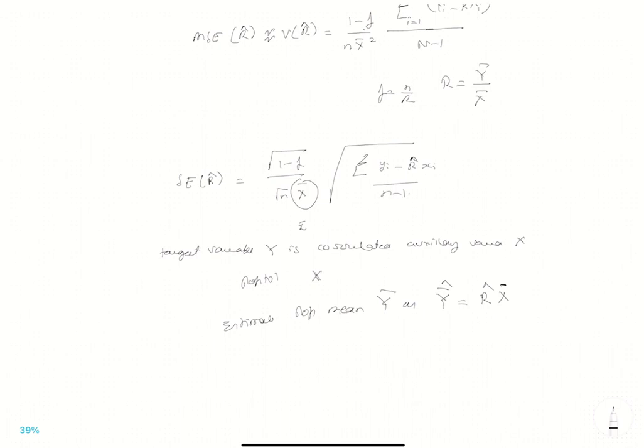So we can estimate this. And the population total y, population total y will be r hat x. Where r hat is y bar upon x bar. And these are called the ratio estimators.